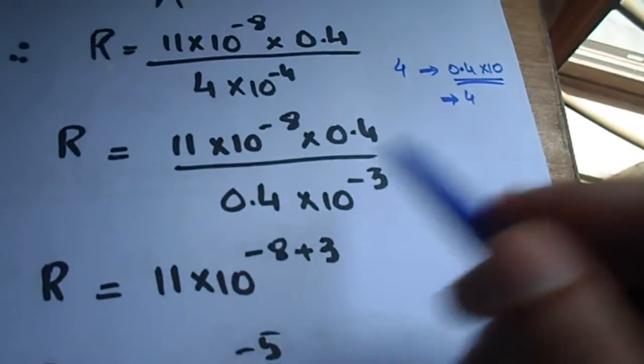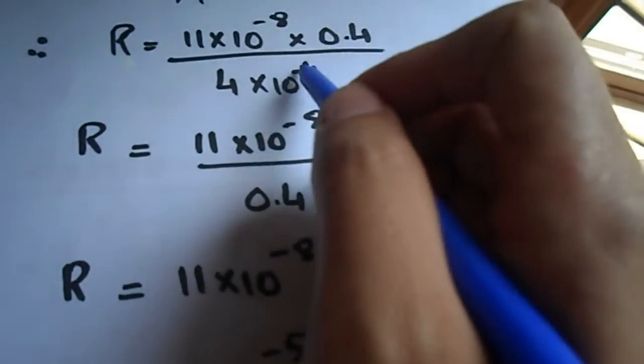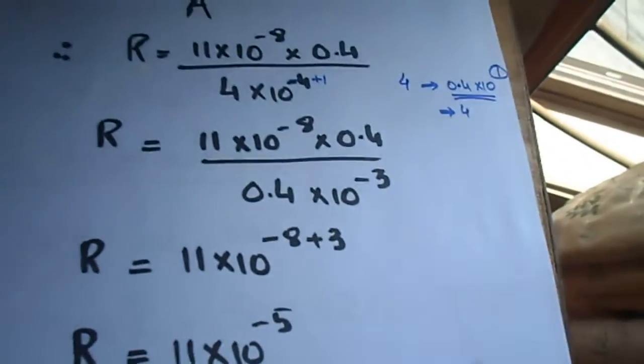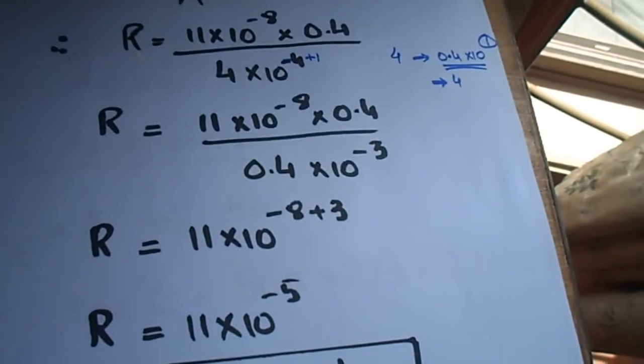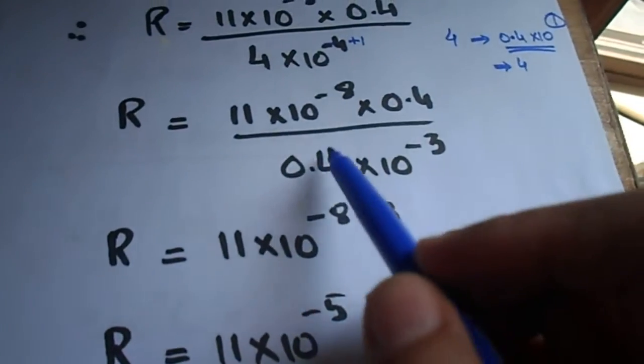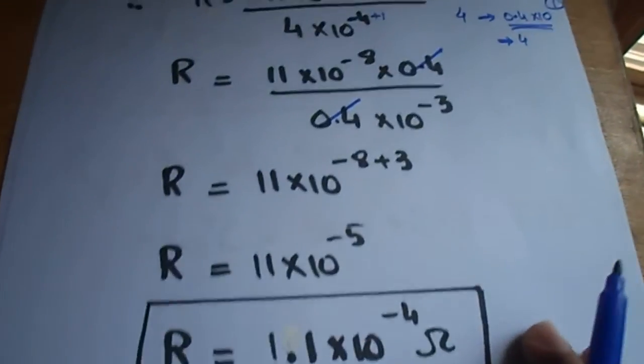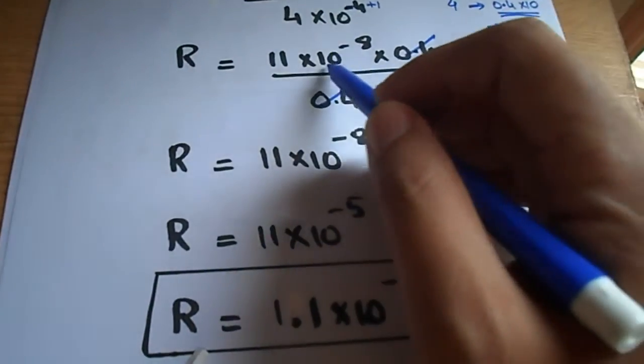So 0.4 multiplied by 10 gives us 10 power 1, and minus 4 plus 1 will be 10 power minus 3. Now why did we do this? Because this 0.4 and this 0.4 will be cancelled, and we will simplify. We will have the basis of both 10, and the powers will be added.